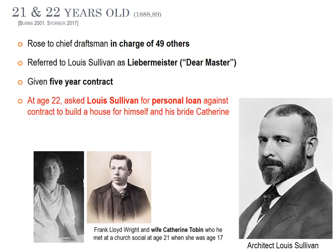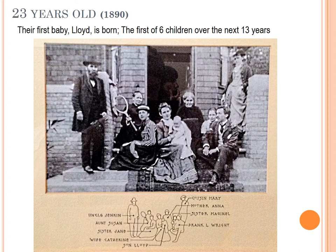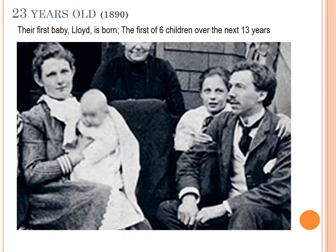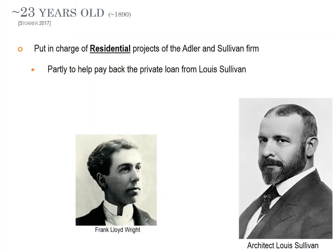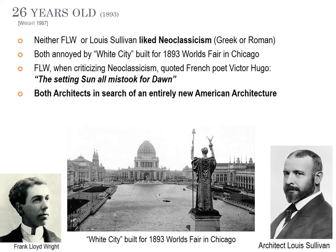After a while he worked his way up, rose to chief draftsman and supervised 49 others. He would refer to Louis Sullivan as his Liebermeister — the dear master. He was given a five-year contract. At age 22, he asked Louis Sullivan for a personal loan to build a house, and he got one. He also met his wife Catherine Tobin, who was 17 — he met her at age 21 at a church social. They were soon married and had six children over 13 years.